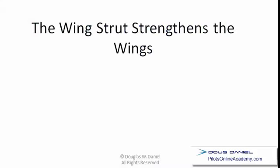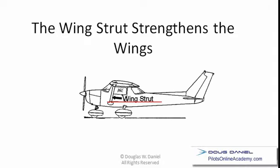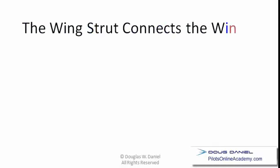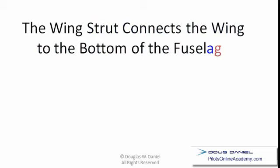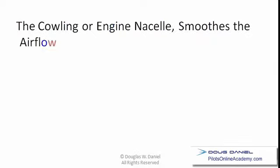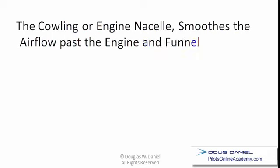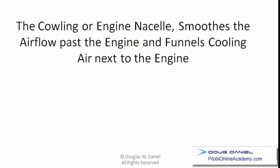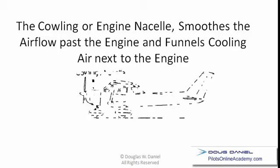The wing struts strengthen the wings and connect the wing to the bottom of the fuselage. The cowling, also known as the engine nacelle, smooths the airflow past the engine and funnels cooling air next to the engine.